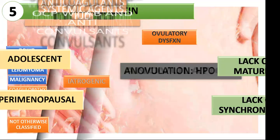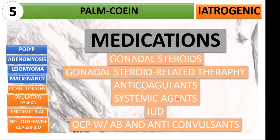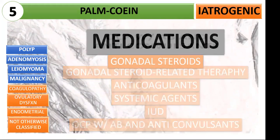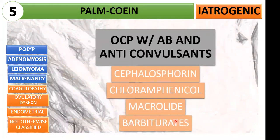Next is AUB-I: iatrogenic — meaning AUB is due to medical devices or drugs given by the doctor. Listed are drug classifications that cause AUB. What I want to emphasize is the last one: antibiotics and anticonvulsants that when taken with OCP will lead to AUB. These are cephalosporins, chloramphenicol, macrolides, and barbiturates. The drug interaction with OCP leads to increased levels of estrogen and manifests as irregular bleeding. Memorize these four drug classes.